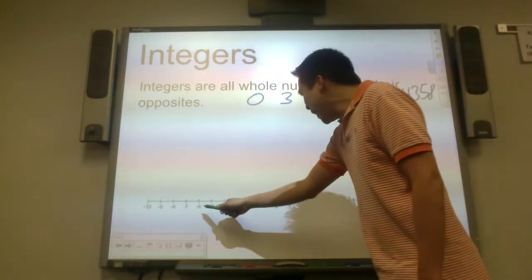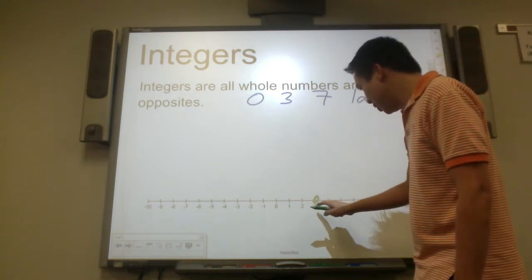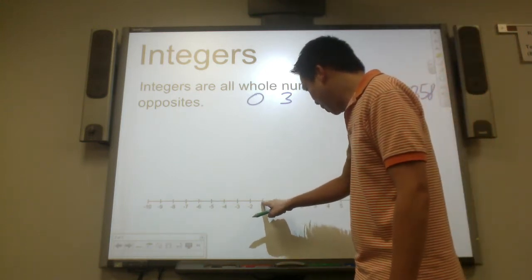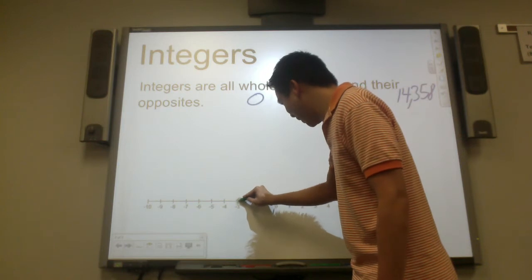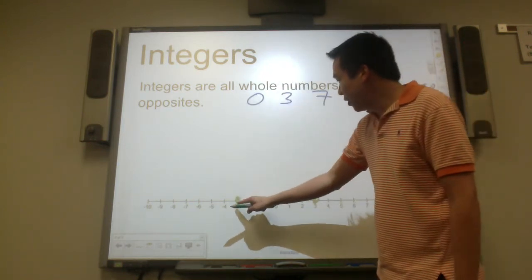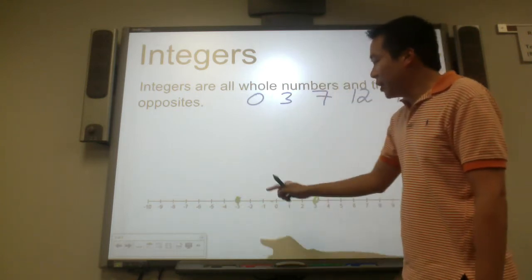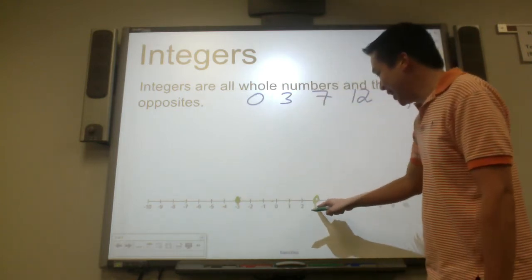Which negative integer is three units from zero? It's this one right here. So three and the opposite of three is negative three. The opposite of negative three is three.